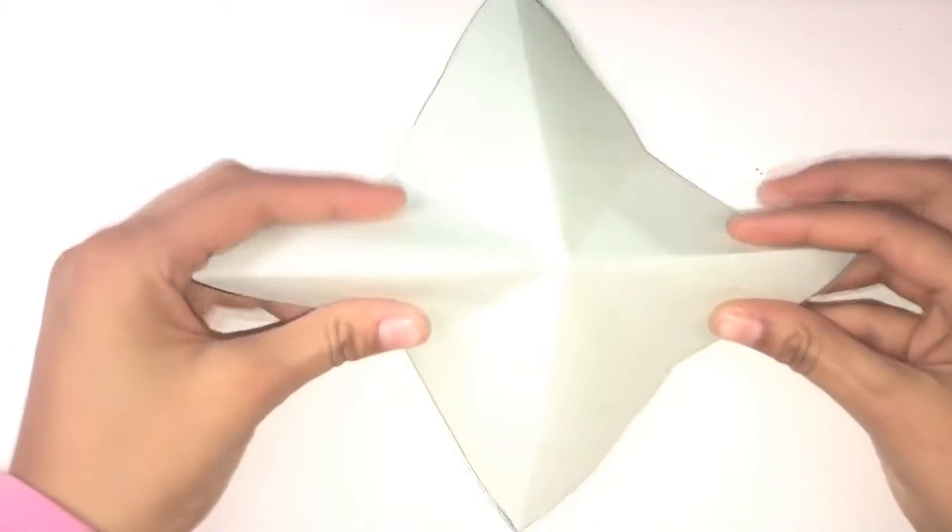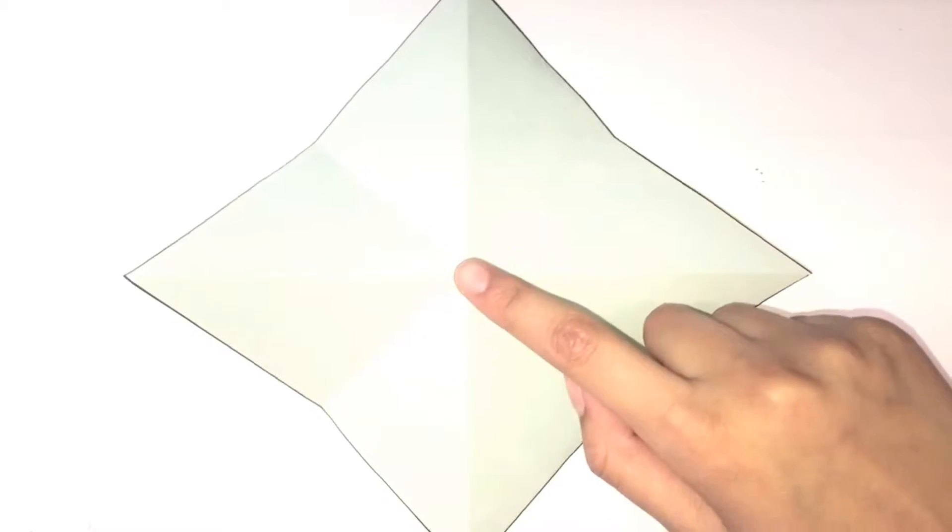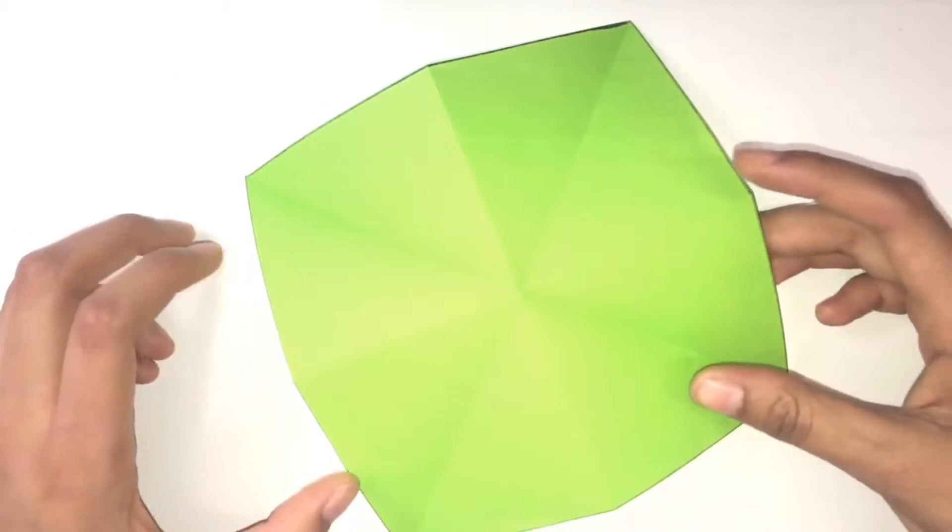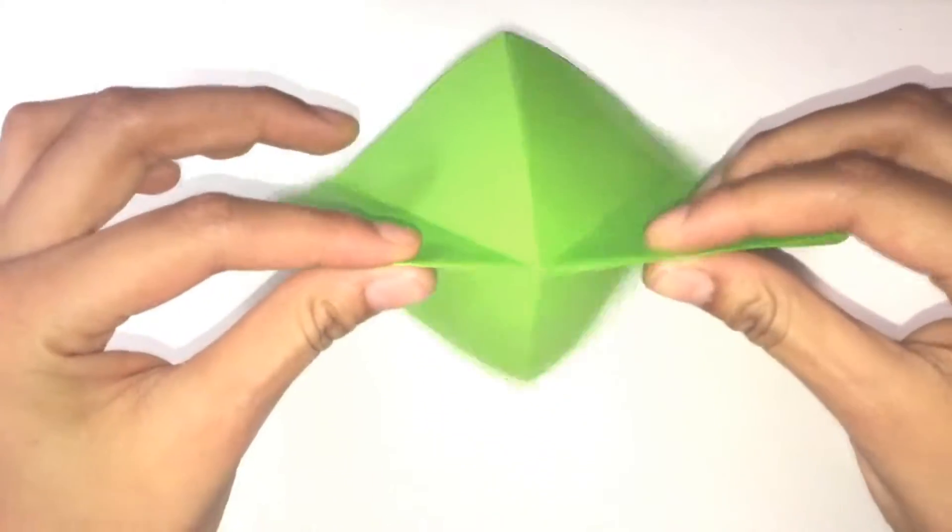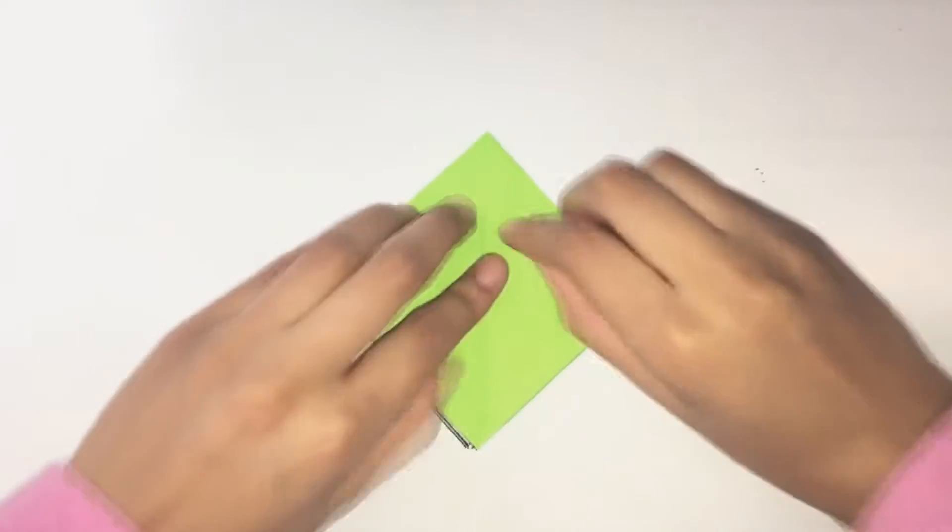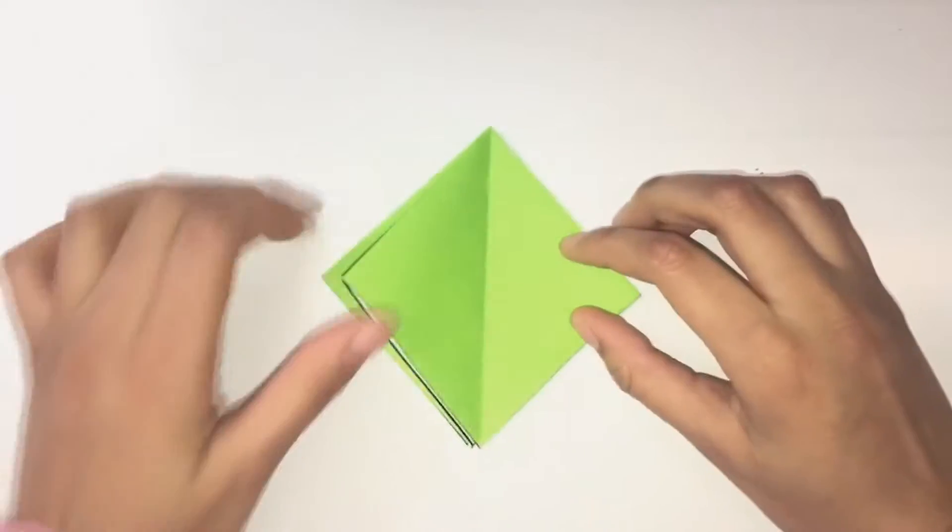Now we're going to form the actual square base. When you turn it over the paper will be sticking up almost like a pyramid. What you want to do is just push down in the middle and it'll flatten out. Turn it over so the color side is facing up and then fold along the horizontal lines. And now you have a square base.